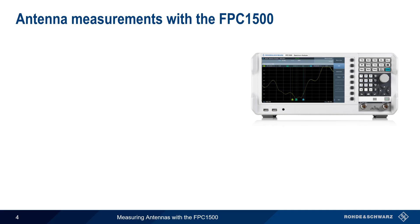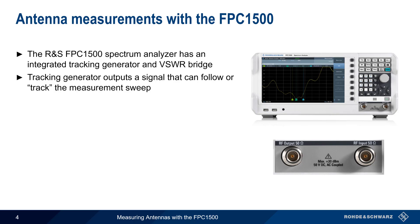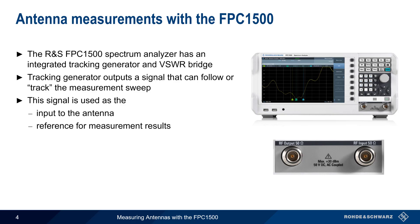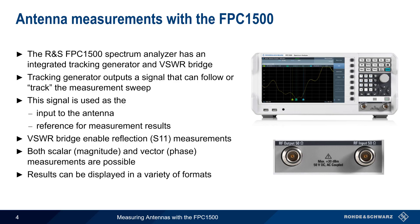The Rohde & Schwartz FPC-1500 Spectrum Analyzer contains both an integrated tracking generator and an internal VSWR bridge. The tracking generator is an RF signal source whose frequency can follow or track the measurement sweep. This signal is used both as the input to the antenna as well as the reference for the measurement results. The integrated VSWR bridge enables the FPC-1500 to make reflection measurements on antennas by separating the forward and reverse power. Both scalar or magnitude measurements and vector or phase measurements can be made, and measurement results can be displayed in a variety of formats.